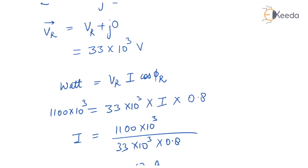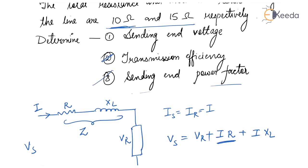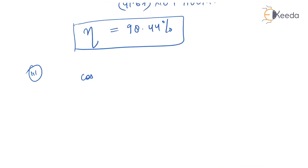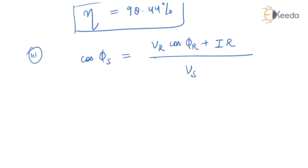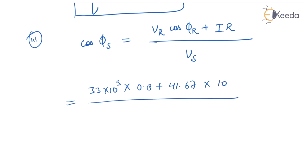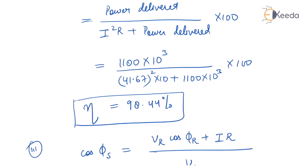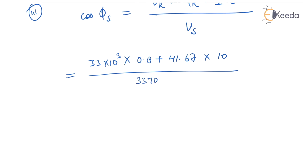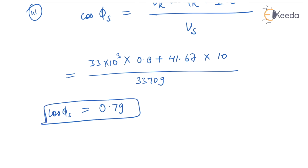Now find the sending end power factor, cos phi S. The formula is cos phi S equals (VR times cos phi R plus I times R) divided by VS. VR is 33 times 10 to the power 3, cos phi R is 0.8, current is 41.67, R is 10, and VS is 33709. So cos phi S equals 0.79. The sending end power factor is 0.79.